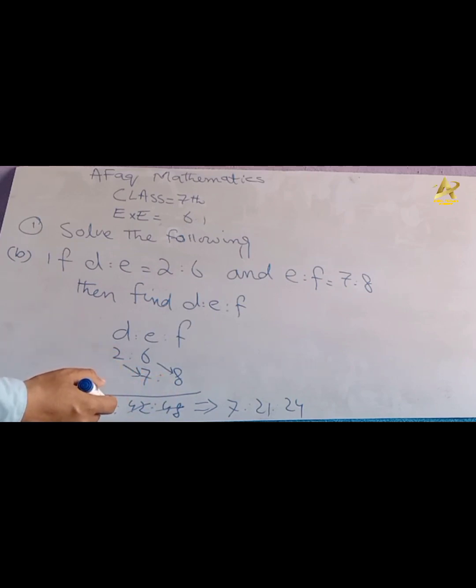Now we simplify these numbers. We divide by 2: 14 divided by 2 equals 7, 42 divided by 2 equals 21, and 48 divided by 2 equals 24. So we get 7 ratio 21 ratio 24.